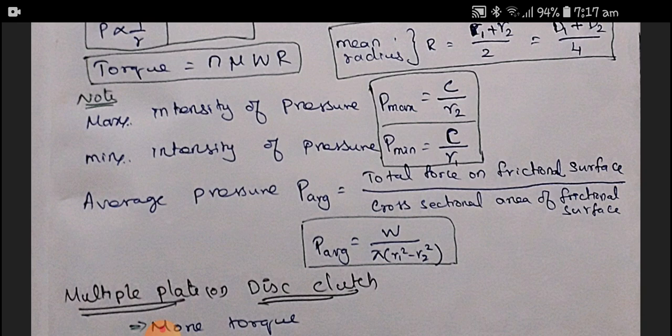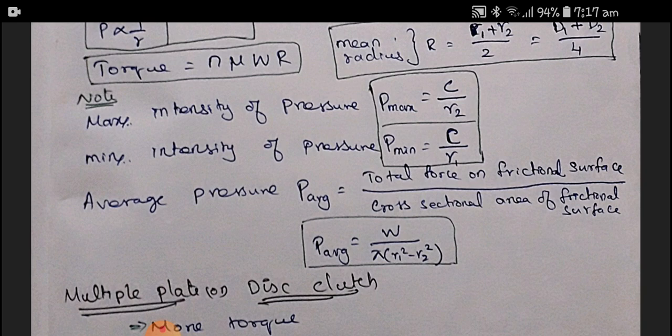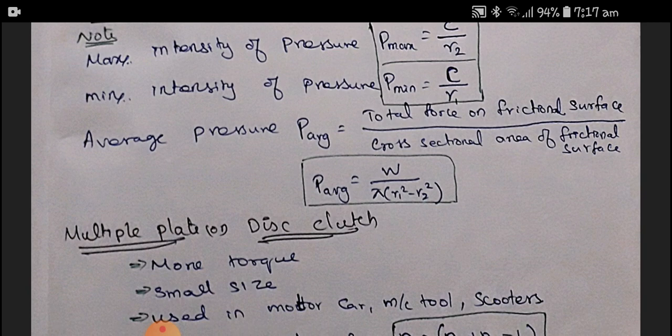Please make a note. Therefore, the average pressure is the total force on the frictional surface divided by the cross-sectional area of the frictional surface. That is, P_average equals W divided by π(R1² − R2²).